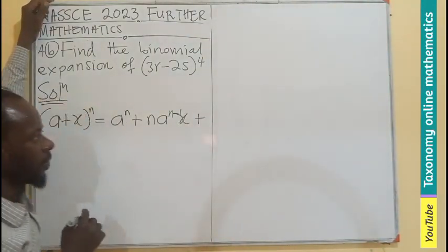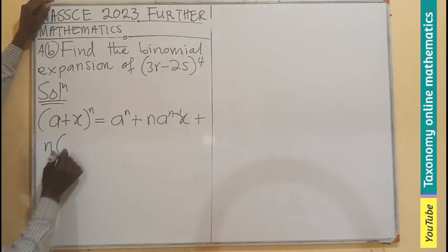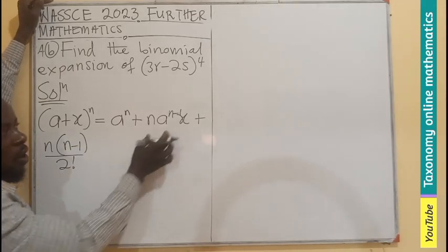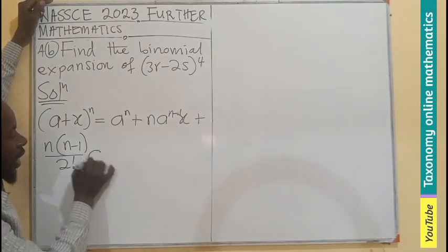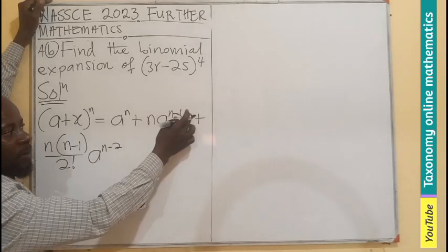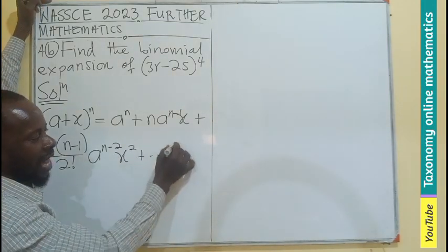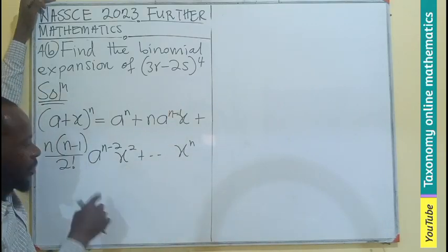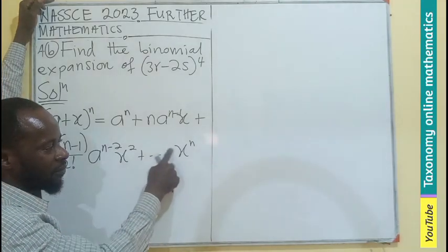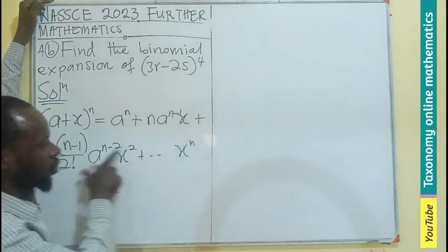The next term will be N times N minus 1 divided by 2 factorial as the coefficient of the product of A and X. So A will come exponent N minus 1, then N minus 2. X which was exponent 1 will now become exponent 2. This addition continues until we get X exponent N — as the exponent of A decreases, it will get to A exponent 0, which equals 1.